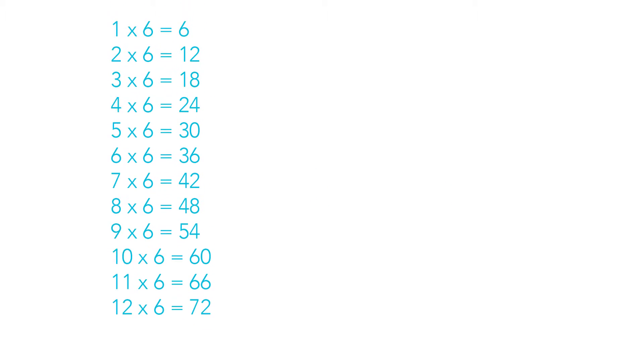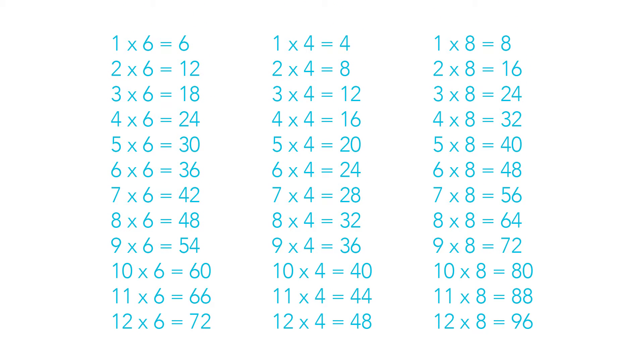Now we need to use our times tables to help us. We need to find the smallest number we can that is a multiple of 6, 4 and 8. Let's have a look at our times tables. 24 is the smallest number that is in the 6, 4 and 8 times tables.